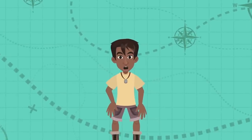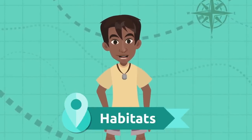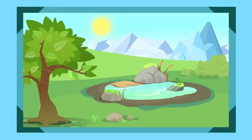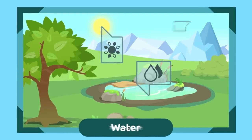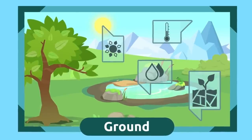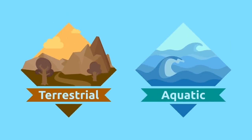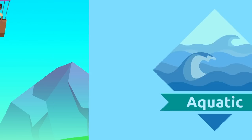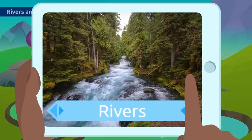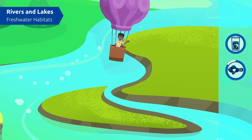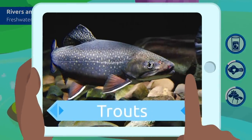Hello again, friends! In the previous video we talked about habitats. A habitat is a place that has the necessary resources for living beings to survive: light, water, temperature, ground, and oxygen. There are two types of natural habitats — terrestrial and aquatic. Today we will be visiting aquatic habitats. Rivers and lakes are freshwater habitats where we can find many animals like trout, and small plants like water lilies also grow there.